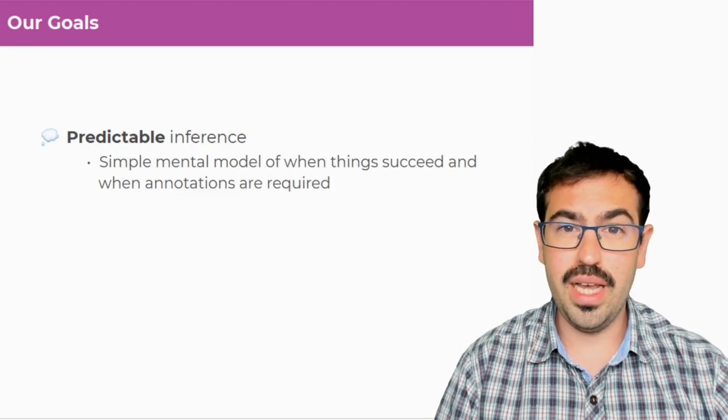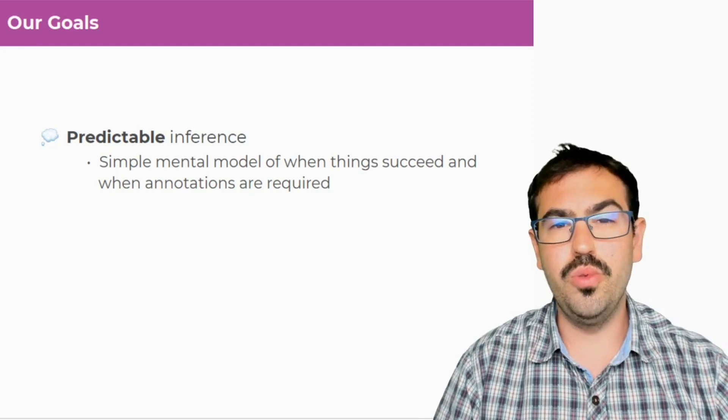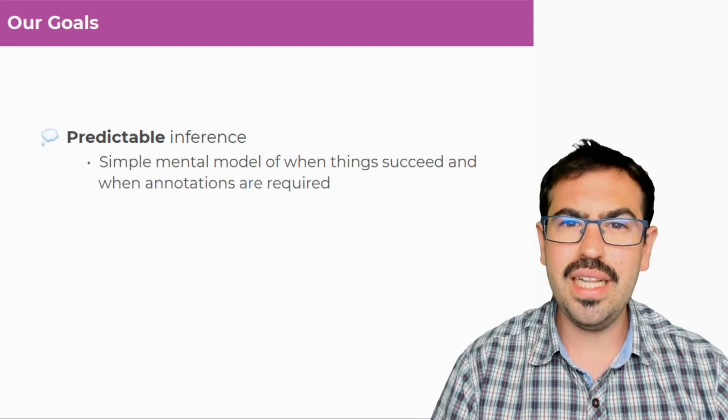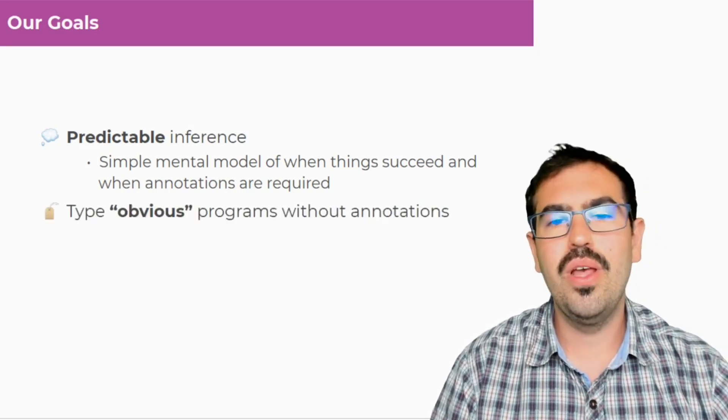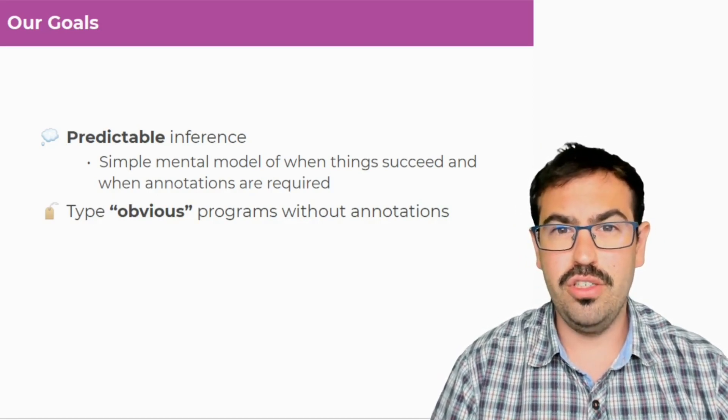So our goal actually has always been to have a predictable inference, for which I mean a simple mental model that the developer can have, of when things will succeed, and also when things break, where the annotation should be placed.